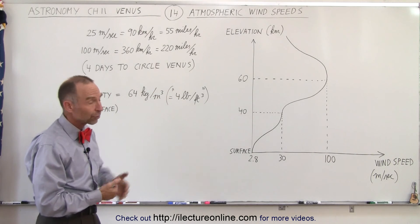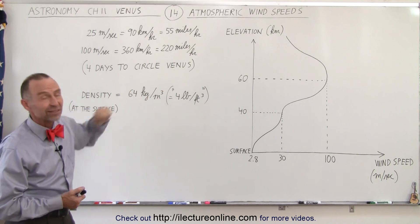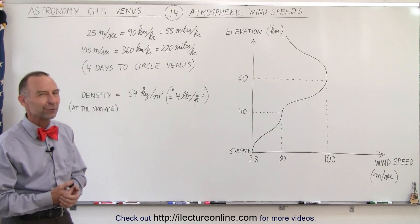At least that's what's going on on Venus. If you want to take a balloon trip around Venus, get to a height of about 60 kilometers and enjoy the ride. It'll only take you four days.